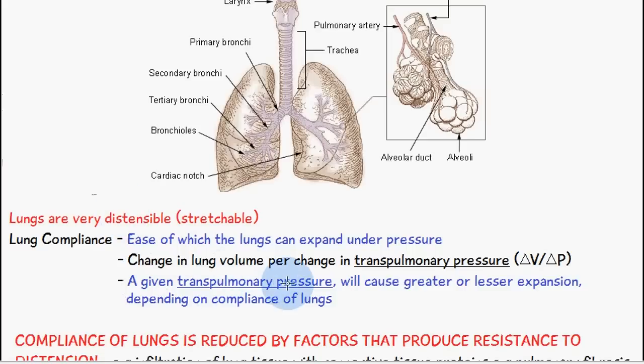At a given transpulmonary pressure — and you might be wondering what transpulmonary pressure is — it's the pressure difference across the wall of the lungs. We have alveolar pressure on the inside and on the outside we have the pressure inside the pleural cavity, which is known as intrapleural pressure. The difference between these is transpulmonary pressure.